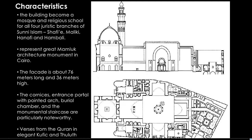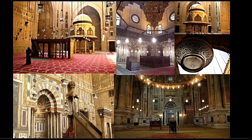The facade is about 76 meters long and 36 meters high. The cornices, the entrance portal with a pointed arch, the burial chamber, and the monumental staircase are particularly noteworthy. Verses from the Quran in elegant Kufic and Thuluth script are featured. This is the Mosque of Sultan Hasan in Cairo, Egypt.